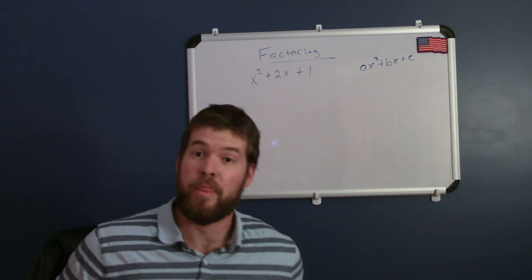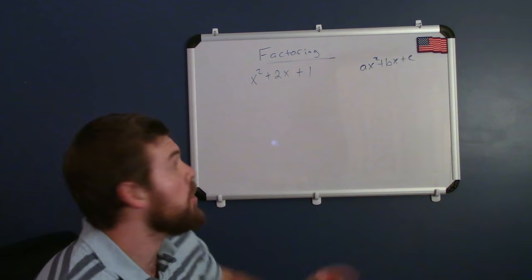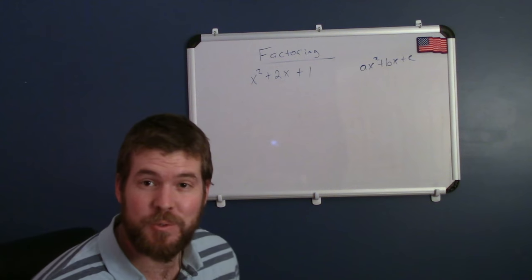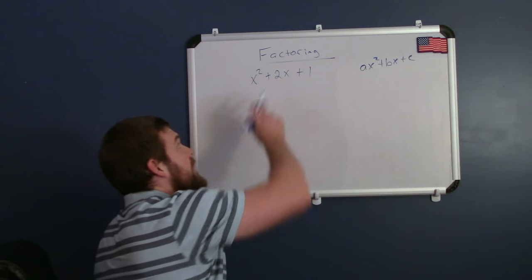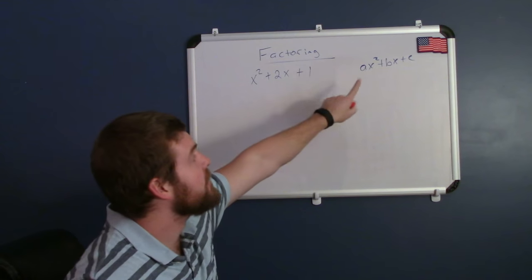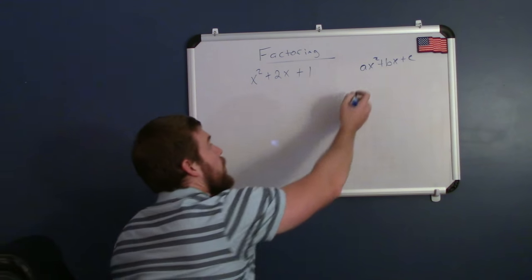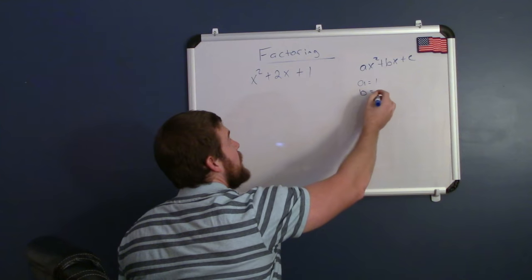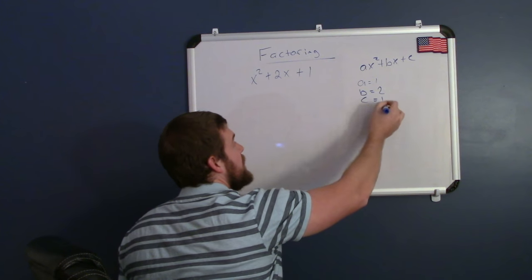Hello, my name is Sean Gannon, and this is Minute Math. Today we're going to talk about factoring. This expression here is in the form ax squared plus bx plus c, where our a value is 1, our b value is 2, and our c value is 1.